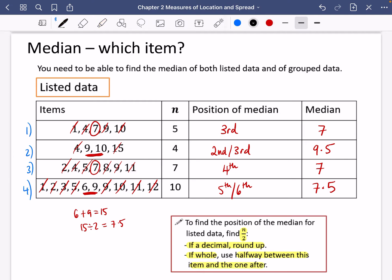This is n. So I'm going to work out what n divided by two. So it'd be 2.5. Yeah, 2.5 rounds up to give you the third. Well, for this one, half of four is two. And when it's a whole number, it says use halfway between this item and the one after. So you're going to go halfway between the second and third.